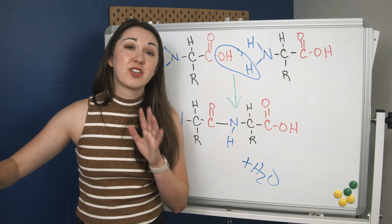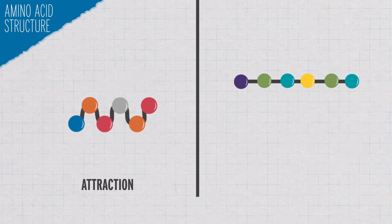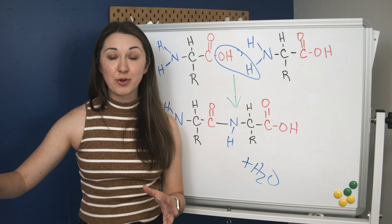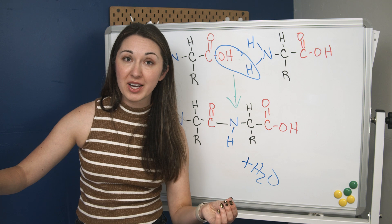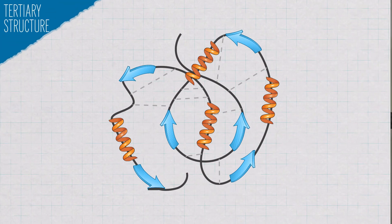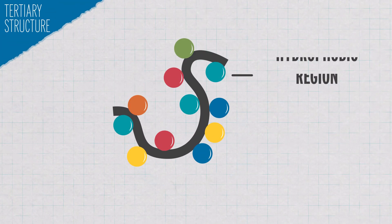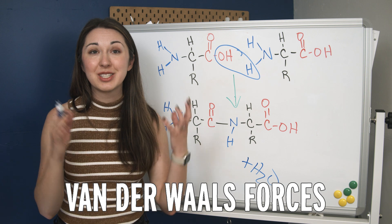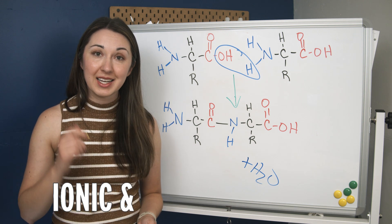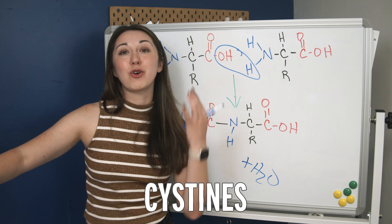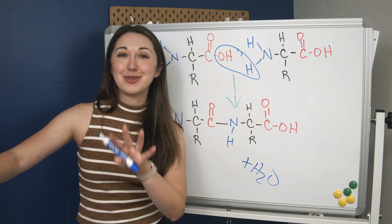The properties of those amino acids affect how they interact with one another — some might be attracted, some repelled — and those interactions form a secondary structure, most commonly alpha helices and beta sheets. These are formed out of interactions between the carbonyl oxygen of one amino acid and the amine hydrogen of another. Those can then fold up on top of each other, giving the protein a three-dimensional tertiary structure. Hydrophobic amino acids turn inwards and hydrophilic ones migrate towards the outside. Van der Waals forces stabilize the inside while ionic and hydrogen bonds stabilize the outside, and links between sulfur atoms on cysteines form disulfide bonds.